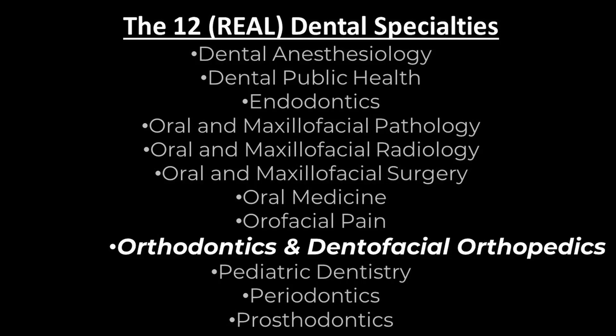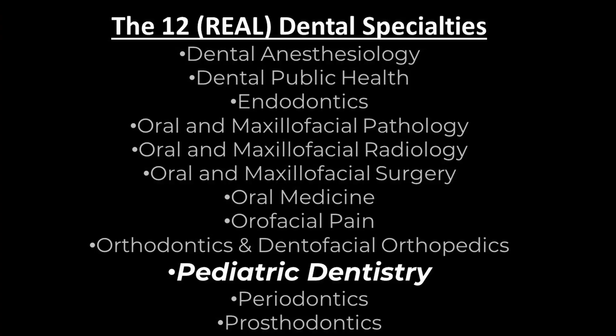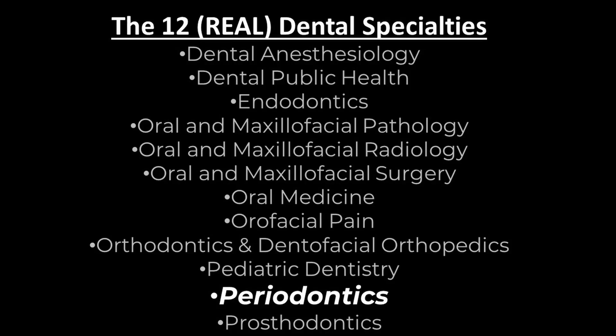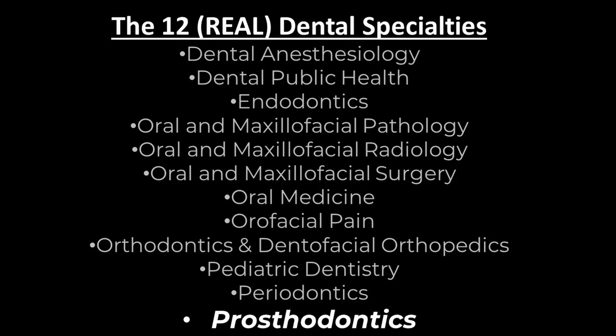Next on the list is orthodontics — these are the doctors who do braces and Invisalign to straighten people's teeth. Next is pediatric dentistry — dental specialists for children. Next is periodontics — these are gum specialists. And last but not least is the specialty of prosthodontics — the doctor who specializes in reconstructing or restoring adult teeth.